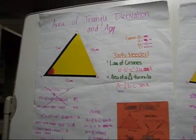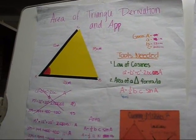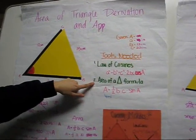Okay, so for my topic, it's area of a triangle derivation and application. And basically what it is, is you're going to use the law of cosines and the area formula.